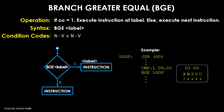However, the status register is affected because a subtraction operation has been carried out. The BGE instruction is executed next. It checks the N and V flag values according to its condition code. If the condition code is one, then the instruction JSR A0 attached to label loop is executed. If not, the instructions following the BGE instruction are executed next.